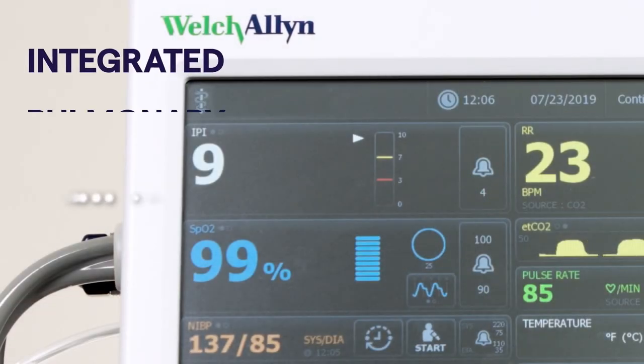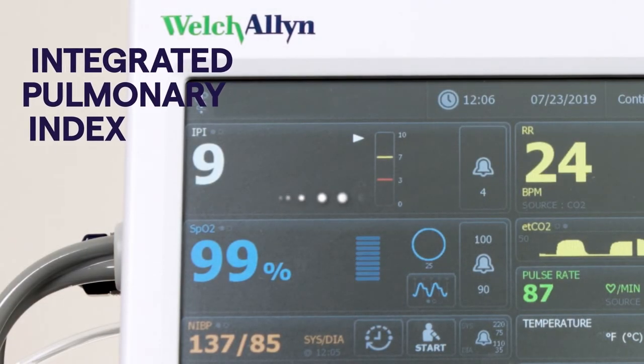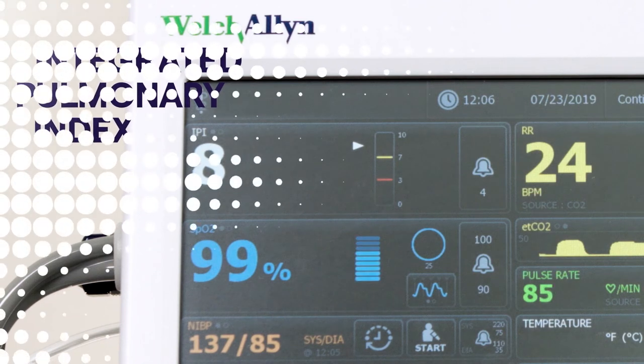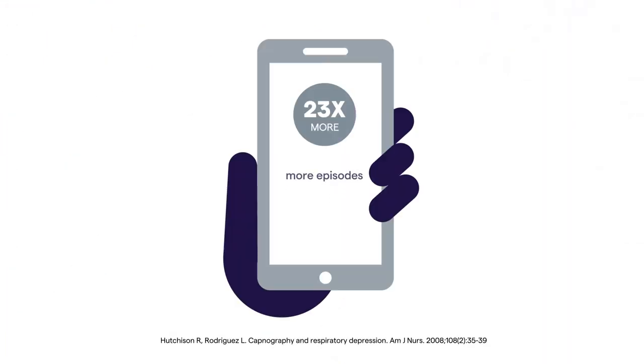It also features an integrated pulmonary index to help caregivers assess respiratory status quickly and easily. With the Connex Vital Signs Monitor, Sarah is able to continuously monitor Michael's CO2 at the airway during his stay, enabling her to intervene early if needed to help prevent patient deterioration.